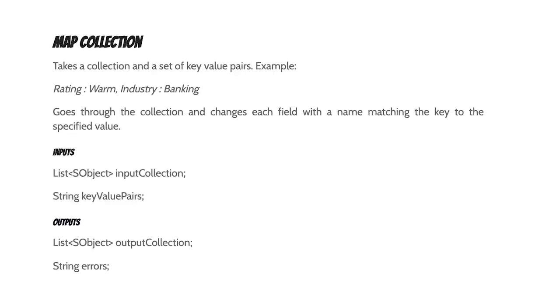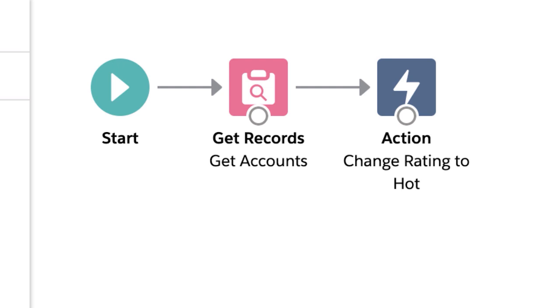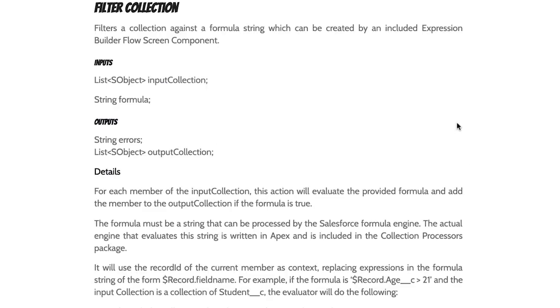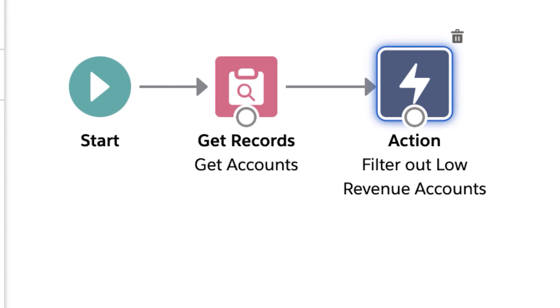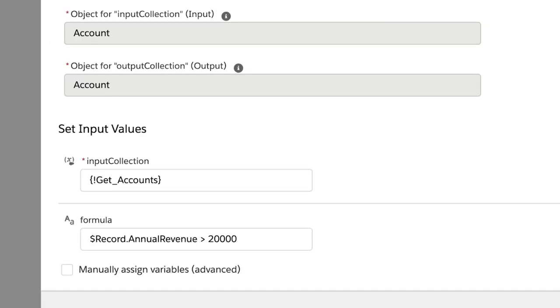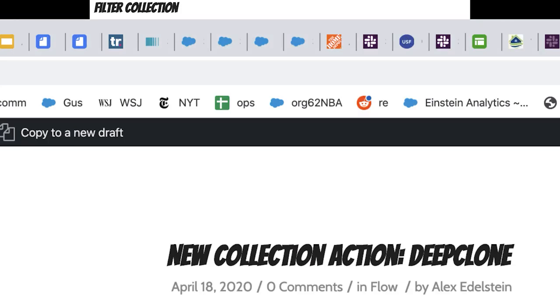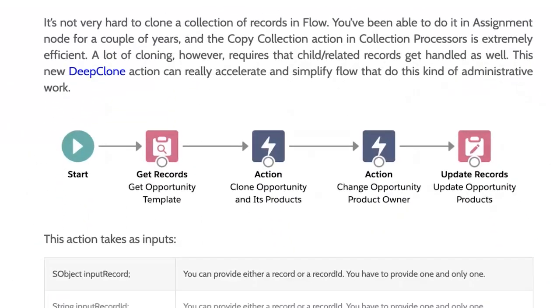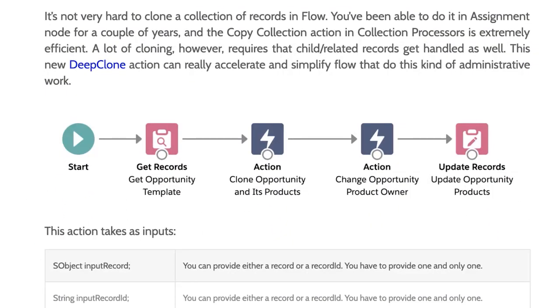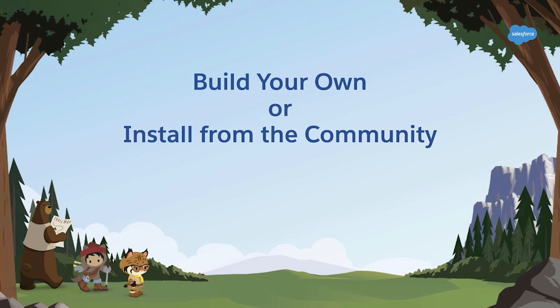Map Collection is an action that takes any collection and updates one or more of its fields for every record in that collection. Filter and Sort allow you to reduce a collection into a smaller set. Clone Record and Deep Clone make it possible to replace 10 flow elements with a single flow action. All of the actions just mentioned can be easily built, but there are also existing versions of them in the Salesforce community that can be installed to add power to your flows.